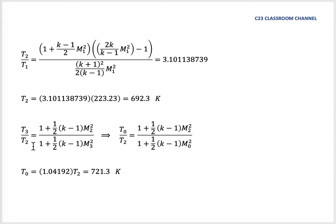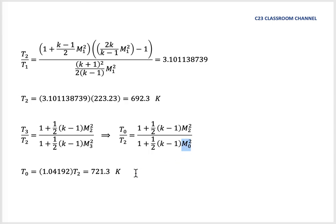To calculate the stagnation temperature, we compare points 2 and 3 because there is no shockwave between them, so we use the isentropic flow equation. We assume point 2 is before the stagnation condition and point 3 is the stagnation condition, so we change T3 to T0 and M3 to M0. At stagnation condition, Mach number is equal to 0. Substituting Mach number equal to 0, we can solve the equation and get T0, the temperature at stagnation condition, equal to 721.3 Kelvin.